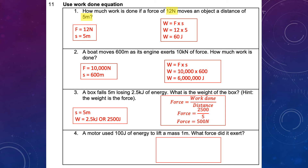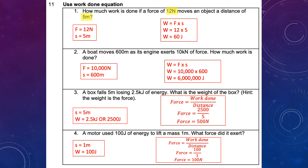Number 4: a motor uses 100 joules of energy to lift a mass 1 meter. Displacement is 1 meter, work is 100 joules — no conversions needed. Using force equals work divided by distance gives you 100 newtons. Make sure you have all the correct answers displayed — you will not get points on assessments if you just write the answer without showing your work.